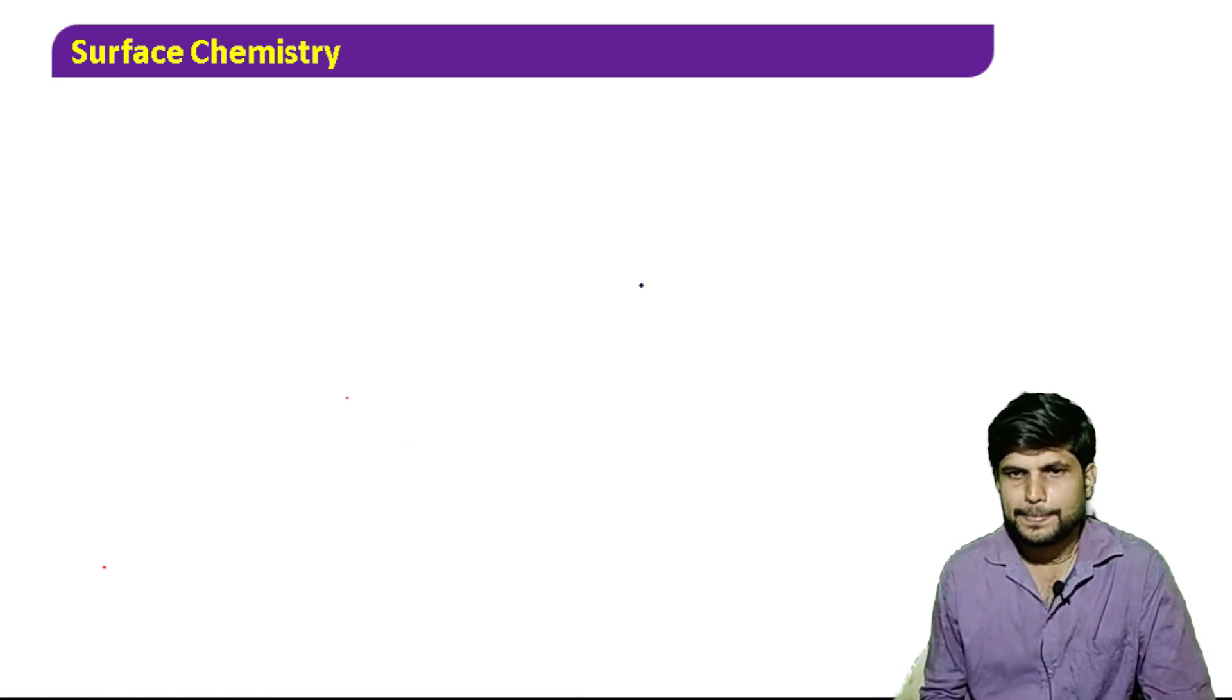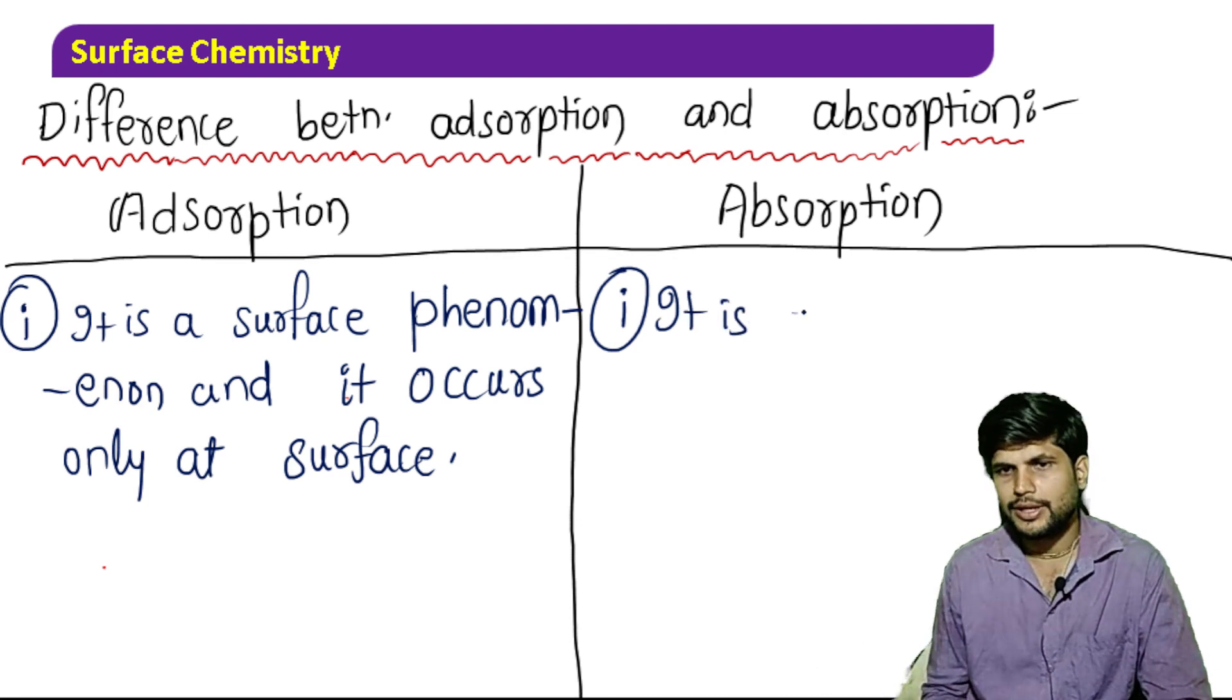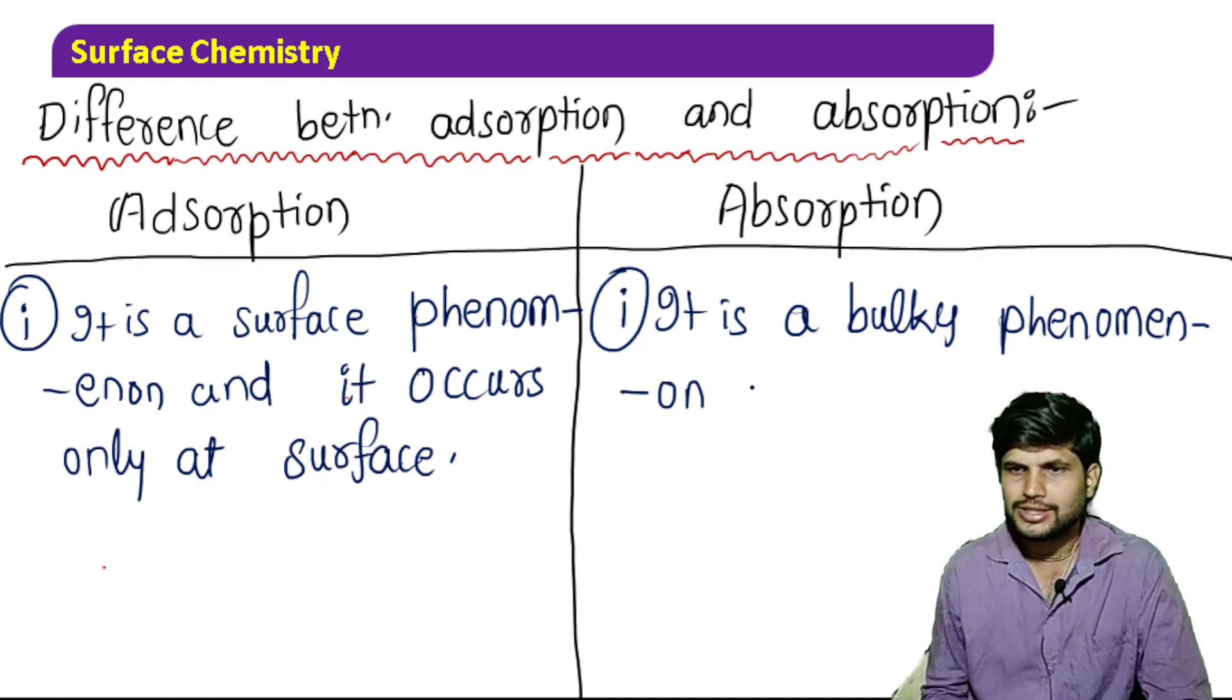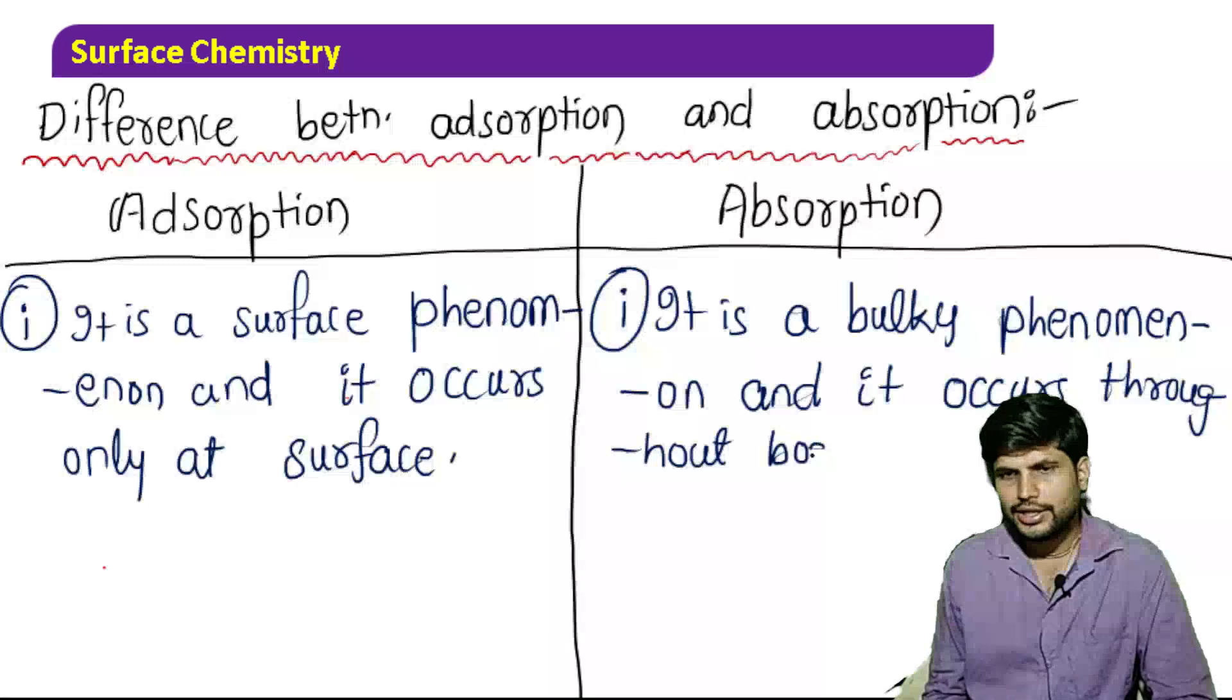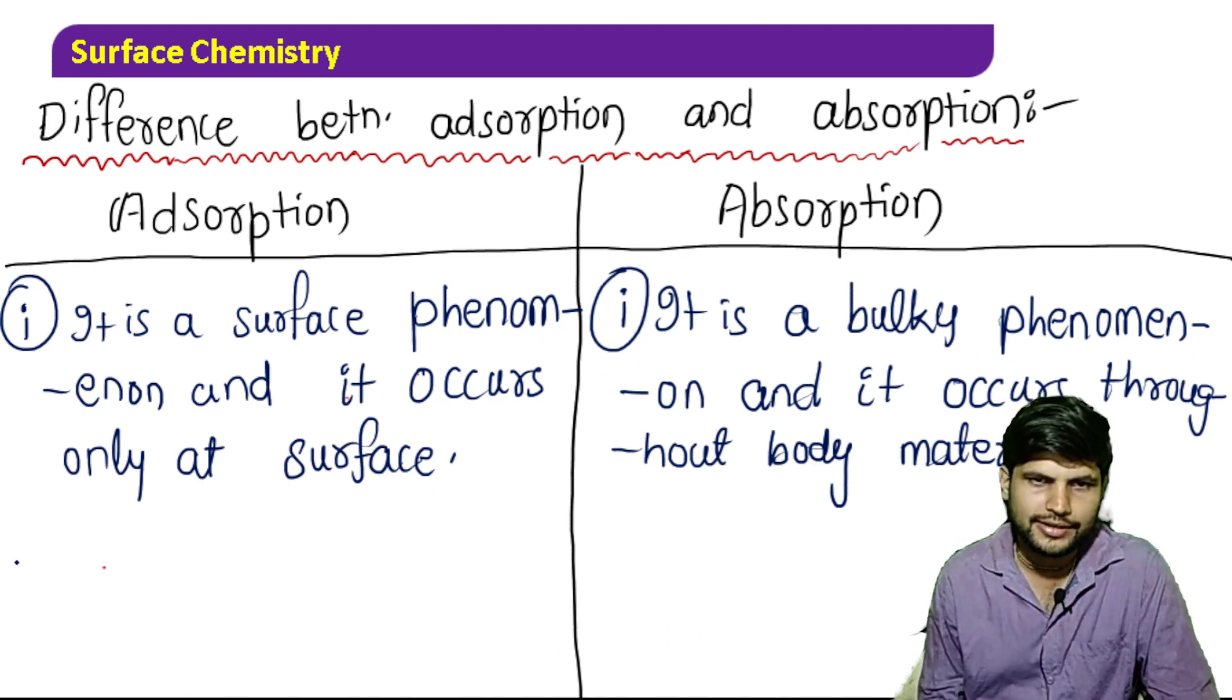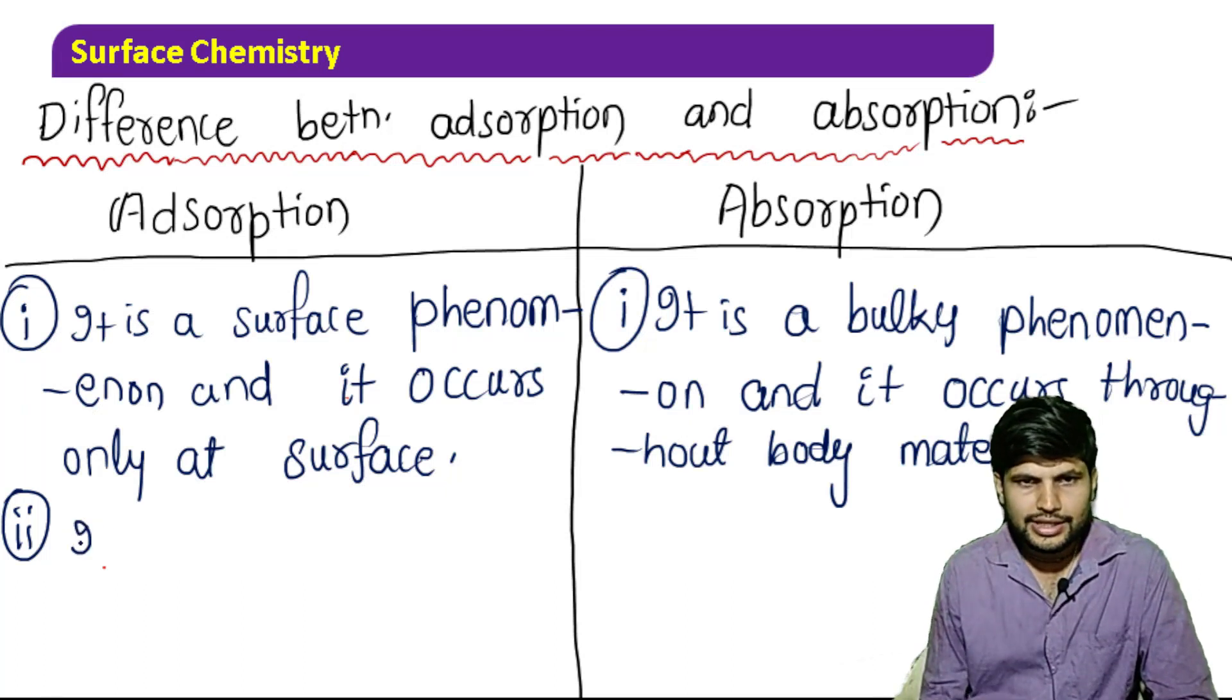Whereas absorption, it is a bulk phenomenon. The whole body, the entire sample throughout. It is a type of absorption and it occurs throughout the body material. Not at the center or just the surface, but throughout.